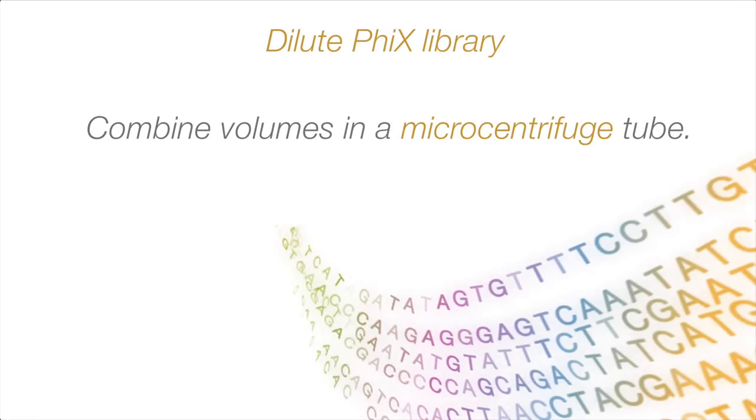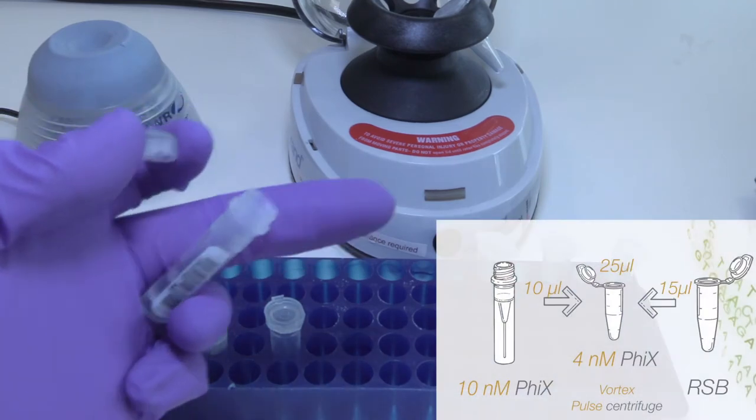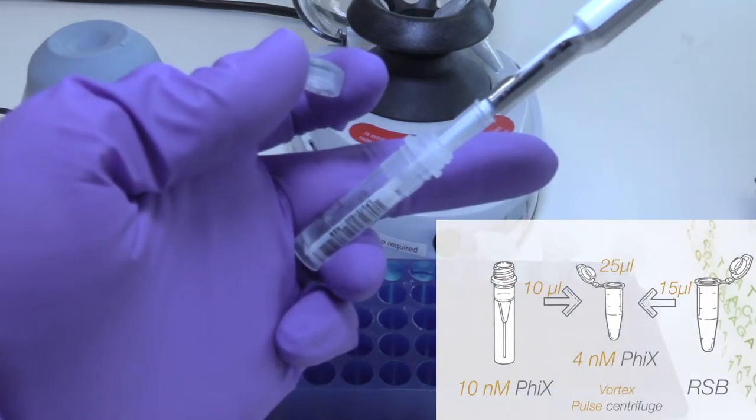Next up we need to dilute the Phi-X library. Thaw a tube of 10 nanomolar Phi-X stock. This tube contains a volume of 10 microliters library.